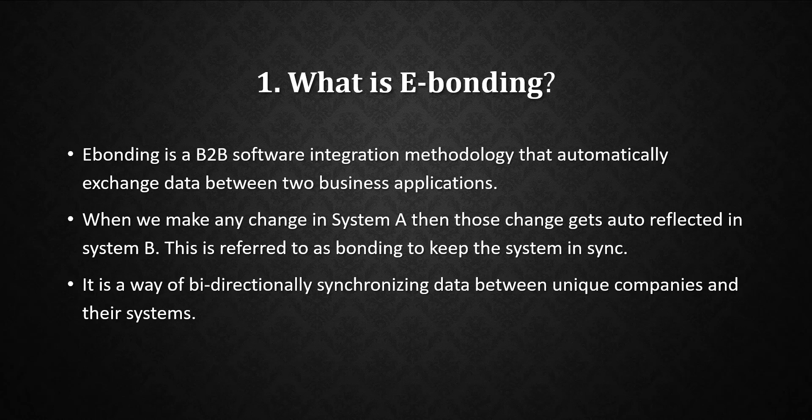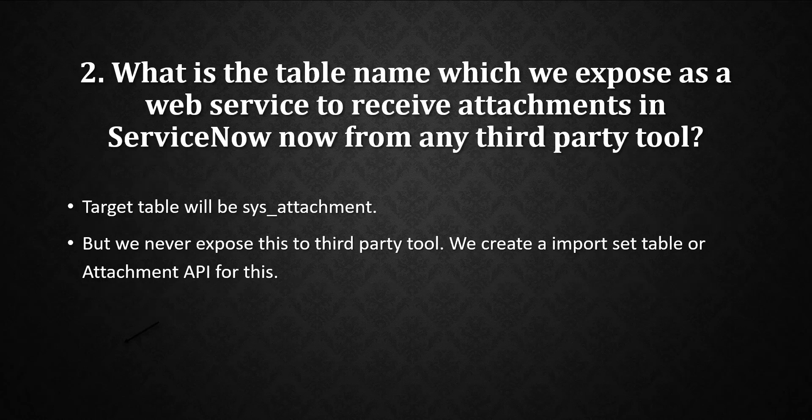E-bonding is a B2B software integration methodology that automatically exchanges data between two business applications. When we make any change in system A, those changes get auto-reflected in system B. This is referred to as bonding — to keep the systems in sync. In other words, it is a way of bi-directionally synchronizing data between unique companies and their systems.